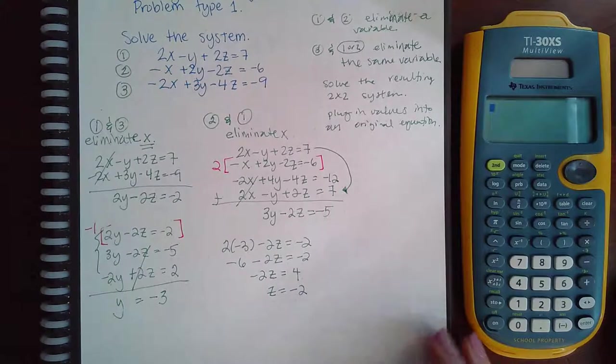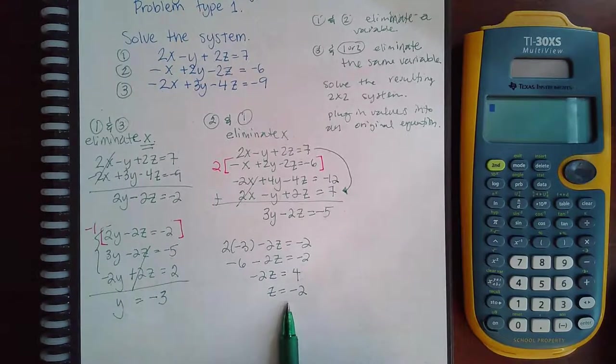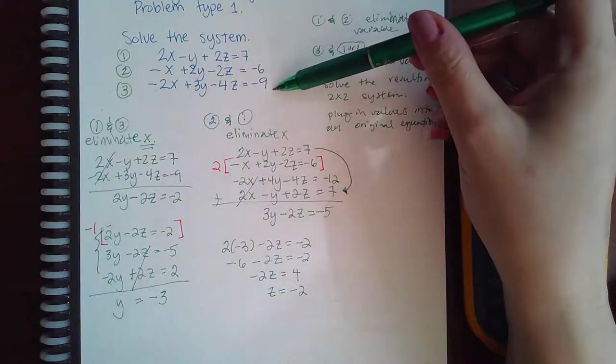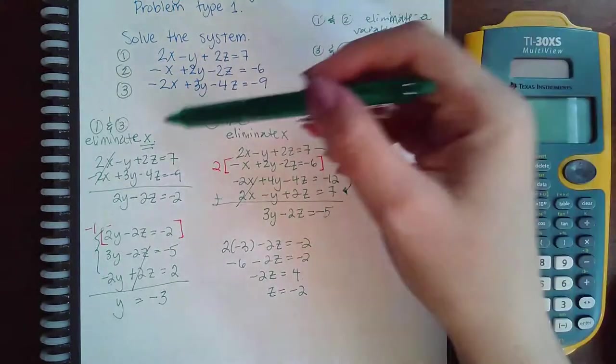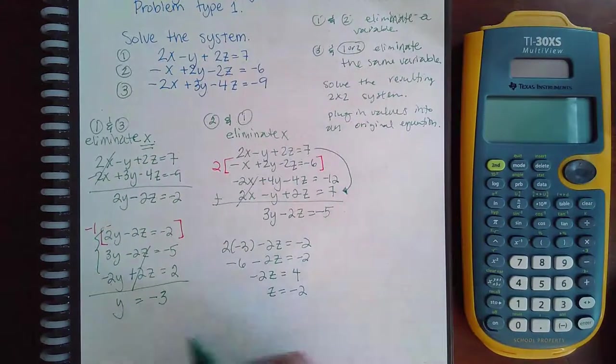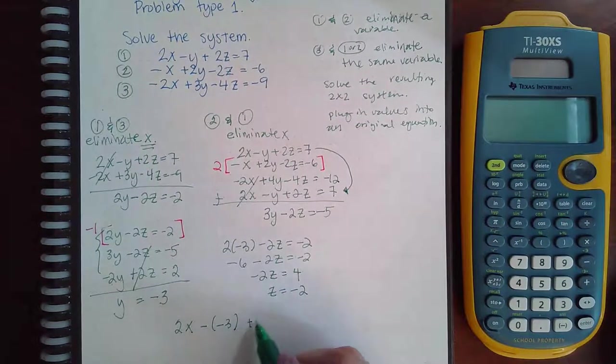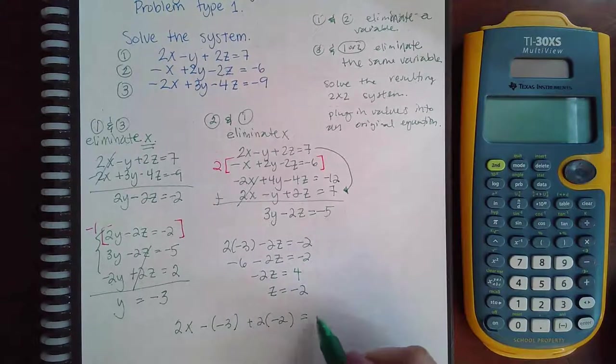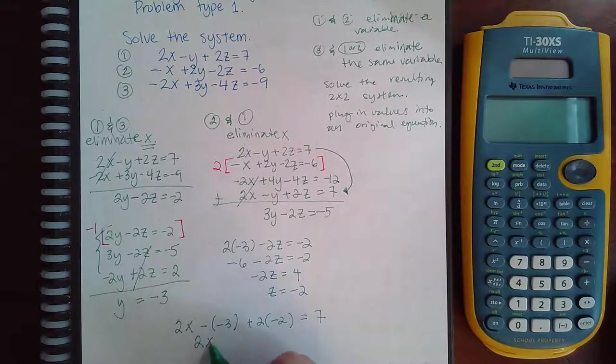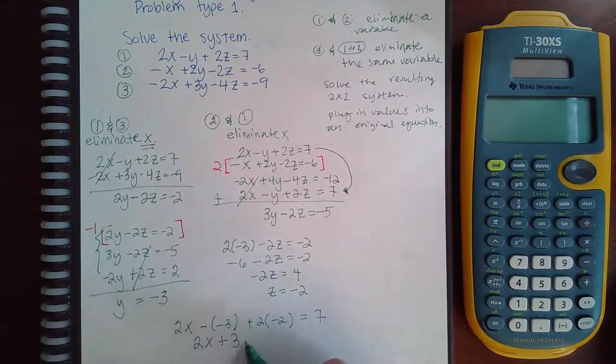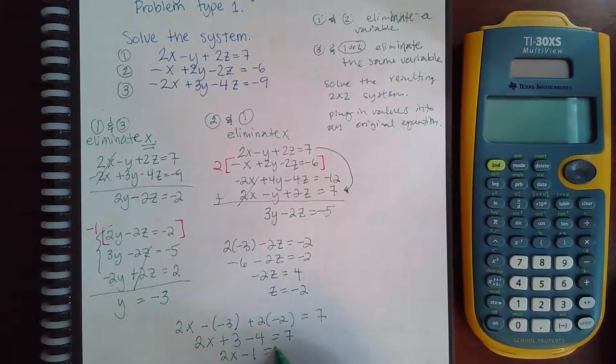Now I'm finally at the very last step, and the very last step is to take the two numbers you just found and plug them into one of the original equations to find out the missing variable, which is x, because that's the one I got rid of at the very beginning. So I'm going to use the top equation. I have 2x minus y, which is negative 3, plus 2z, which is negative 2, and that should equal 7 according to the top equation. So this becomes 2x plus 3 minus 4 equal to 7, or 2x minus 1 equal to 7.